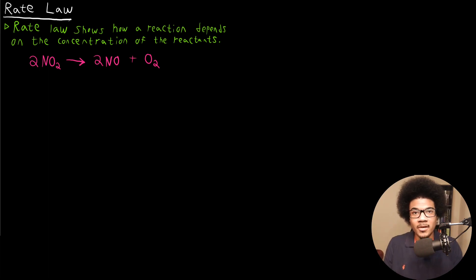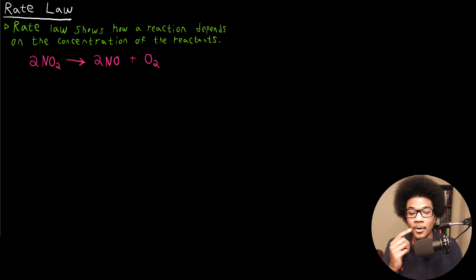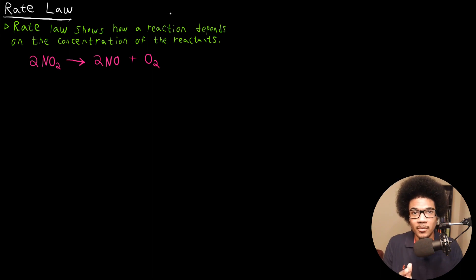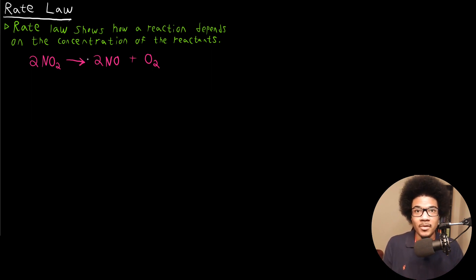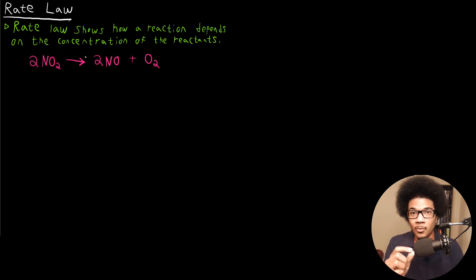In this video, we're going to discuss the rate law. The rate law is an expression that shows how a reaction depends on the concentration of the reactants. In a previous video, we saw that the rate of a reaction is going to depend on the concentration of the reactants. We can define the rate as the rate of disappearance of our reactants. So we know that there's some proportionality between the concentration of the reactants and the reaction rate.